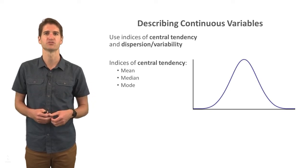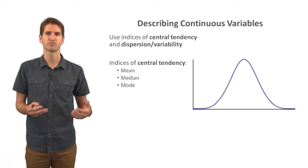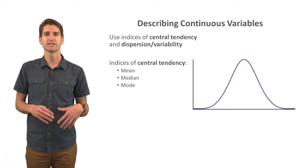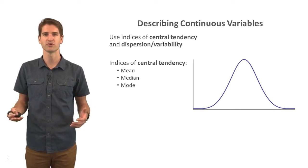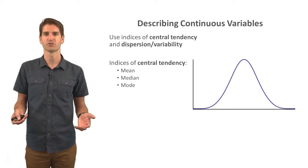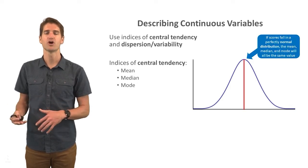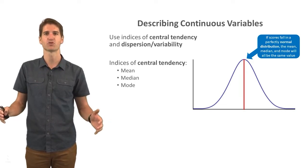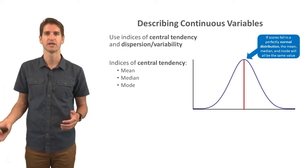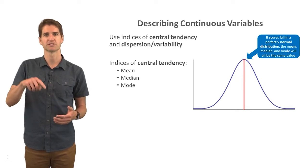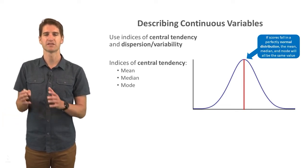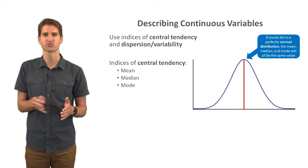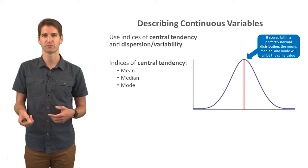Now let's talk about describing continuous variables. We can use indices of central tendency and dispersion or variability. Indices of central tendency include the mean, median, and mode. If we have a normal distribution, the mean, median, and mode will all be equal to each other — if you have a completely normal distribution of scores, it makes this bell shape, and all three will be the same. The mean is the average of the scores, the median is the middlemost score, and the mode is the most frequently occurring score.